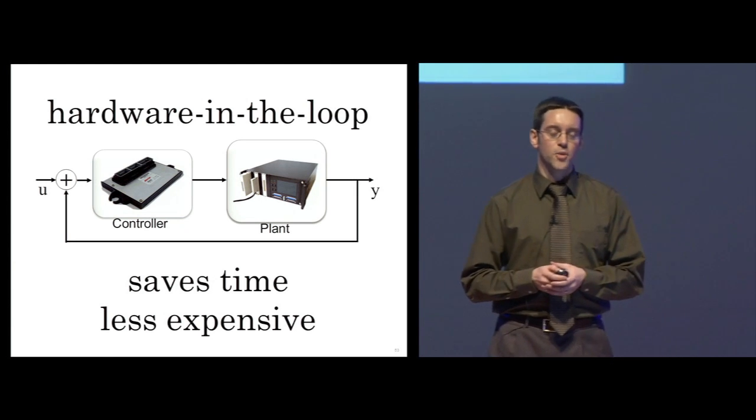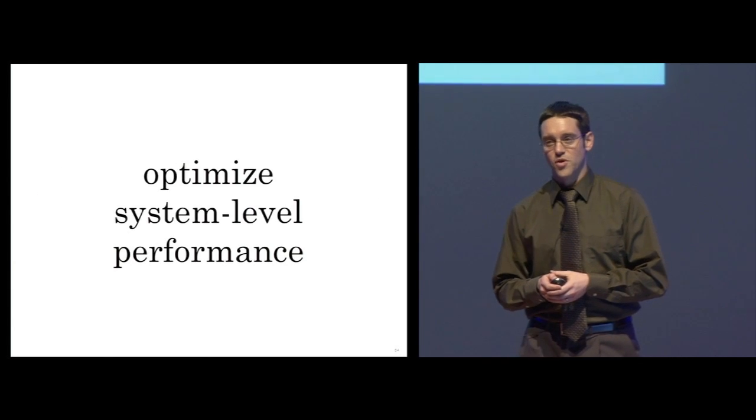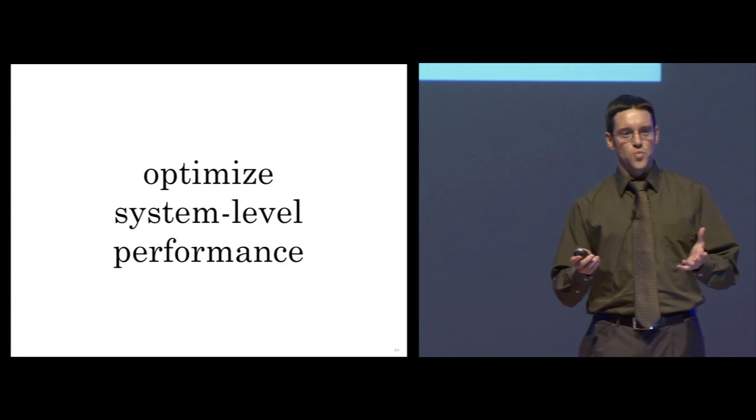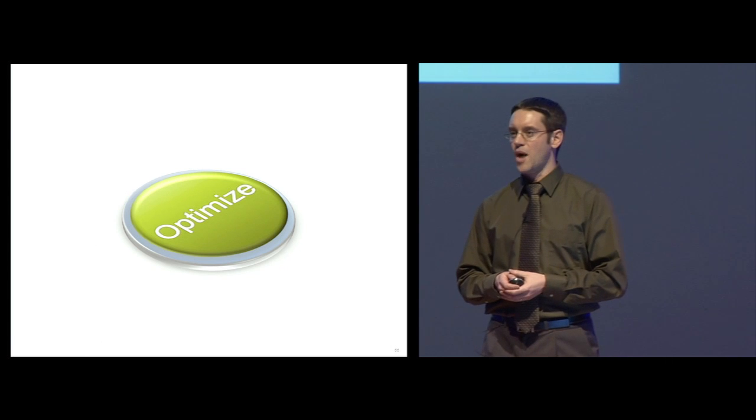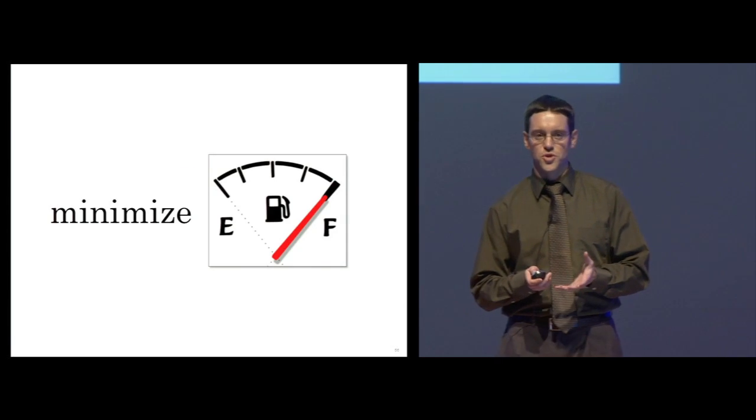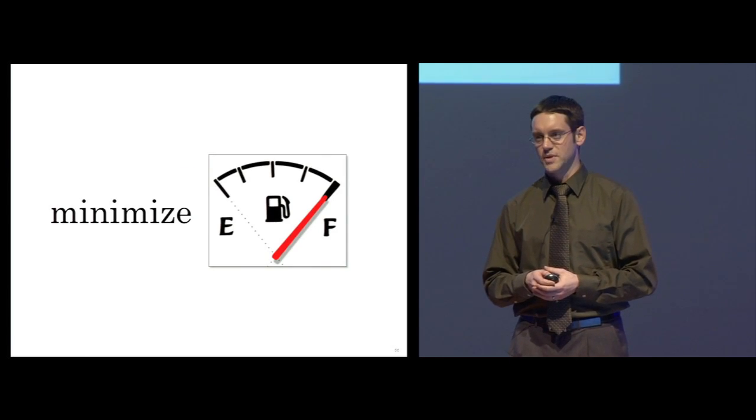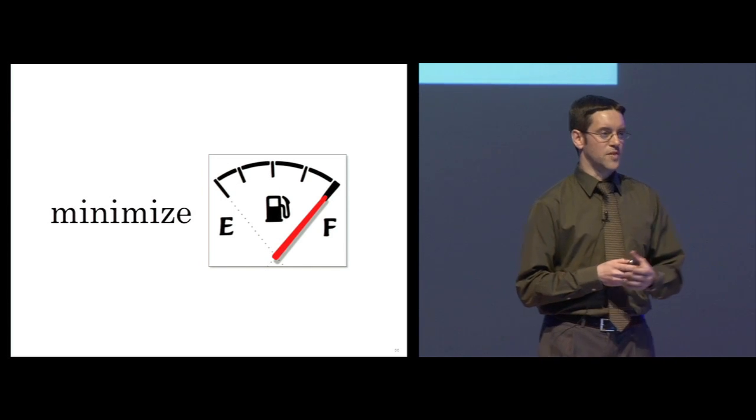Your plant model also helps you optimize system level performance. For example, wouldn't it be nice if you could simply press a button and your vehicle level design would be optimized to minimize the fuel used during a standard drive cycle? Let me give you an example of how this can be done.